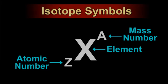The isotope symbols are represented as mass number on top, atomic number at the base with the name of the element.